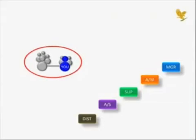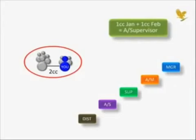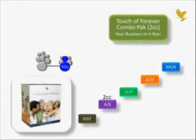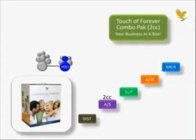You qualify for the level of Assistant Supervisor when you and your group accumulate two case credits within any two consecutive calendar month period. For example, if you and your downline distributors generated one case credit in January and another in February, you would be promoted to Assistant Supervisor. You don't have to wait two months — you can generate the necessary case credits in one month or even one day. We encourage distributors to get started with a Touch of Forever combo pack, which carries a value of two case credits. By purchasing a combo, you become wholesale qualified and have the volume necessary to move up to Assistant Supervisor. The pack is also discounted to less than the total wholesale cost of the individual items it contains, making it a more economical way to start your business.